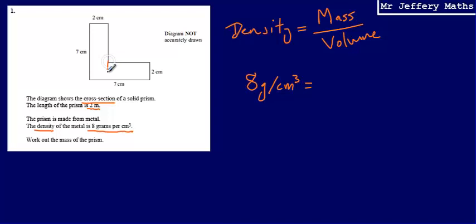I'm going to cut the cross-section and calculate 7 multiplied by 2, which gives 14 centimetres squared. Then I've used up two of the seven centimetres, so the length of this remaining rectangle is 5 centimetres. Doing 5 multiplied by 2 gives 10. So the total area of this cross-section is 24 centimetres squared.